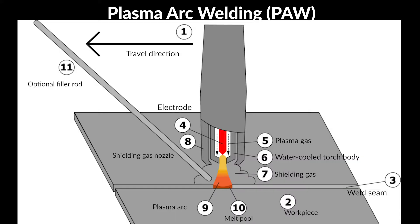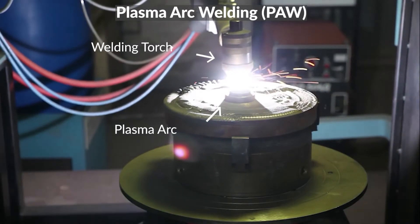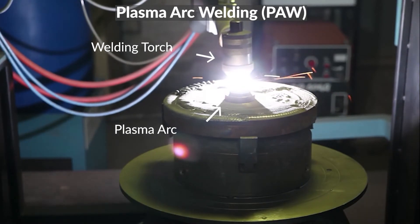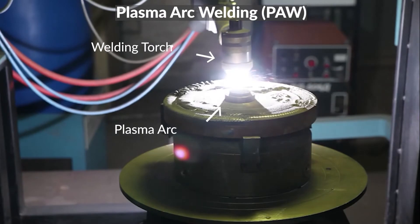Plasma Arc Welding, or PAW, closely resembles GTAW in that PAW also utilizes an electrode that is often made of sintered tungsten. However, in PAW, the electrode is located inside the welding torch, making it possible to separate the plasma arc from the shielding gas envelope. As the plasma is forced through the small opening of the torch nozzle, the heat and the speed of the arc increase, improving the heat transfer properties, stability, and shape of the arc.